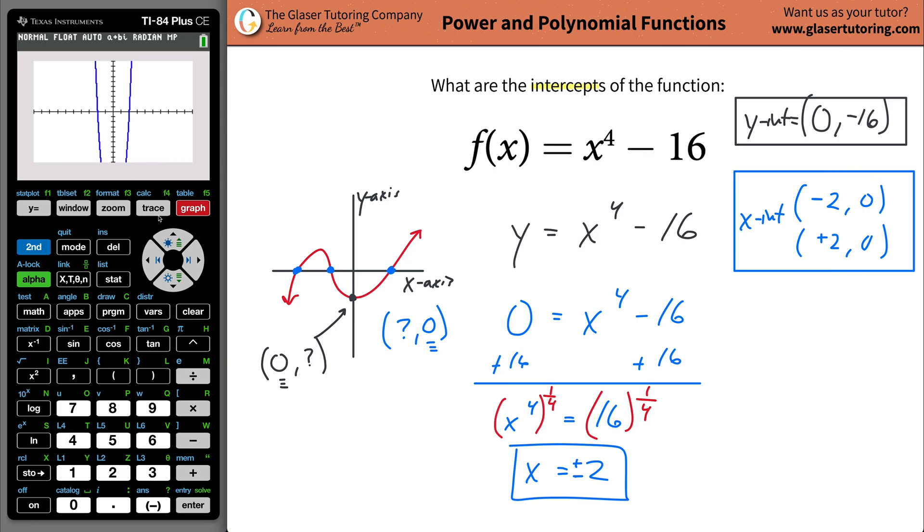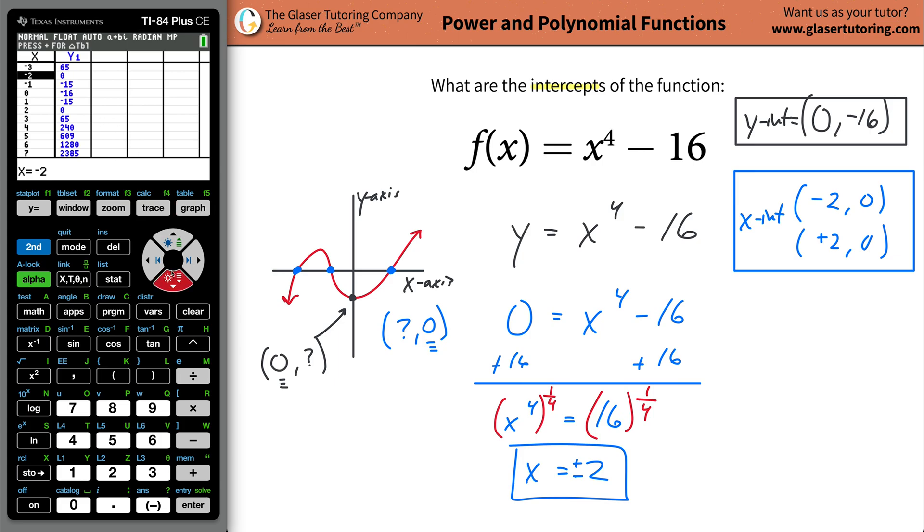And, look, the y value is going to be somewhere all the way down at the bottom. I'm not going to go all the way there. But what I'm going to do, let me just go to my table set. I'll increment it by 1. I'll go to second graph. So, my table is going to be incremented by 1. Look, negative 2. When x is negative 2, y is 0. Awesome. When x is positive 2, y is 0. Awesome.